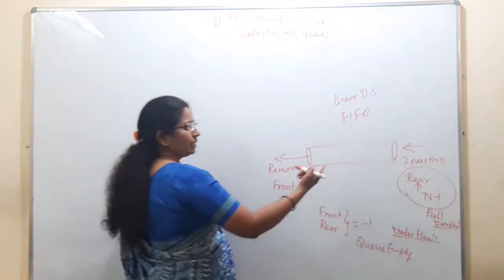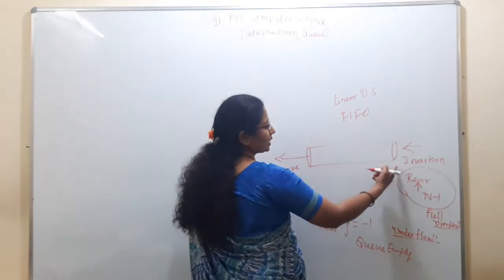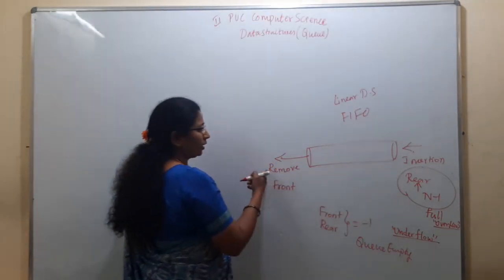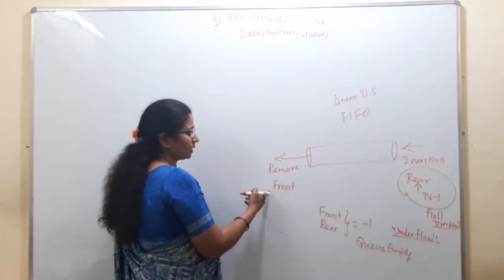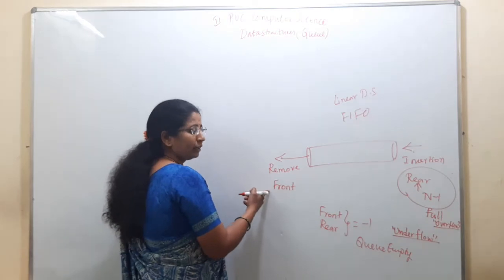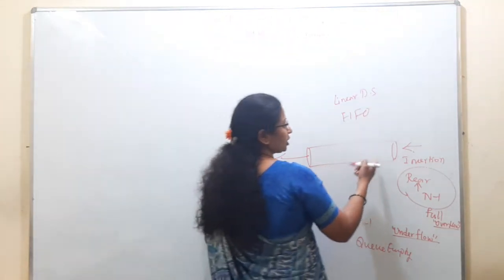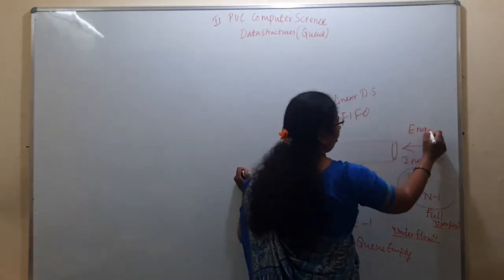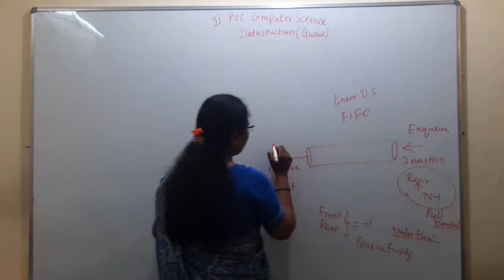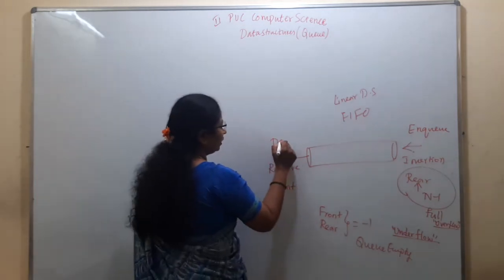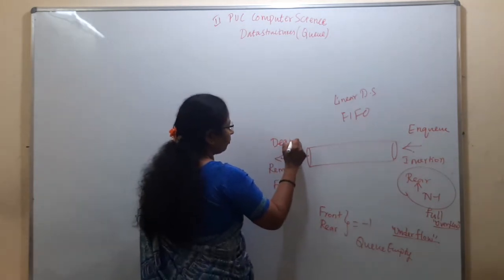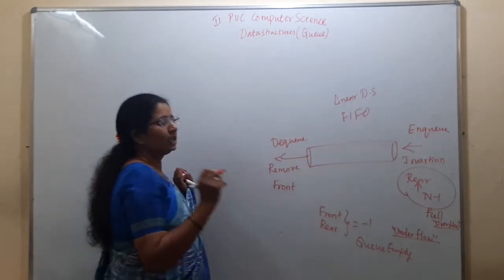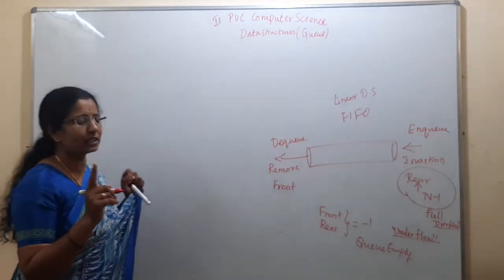Insertion takes place at the rear end. Removal or deletion takes place at the front end. Insertion is called the enqueue operation. Removal is called the dequeue operation.